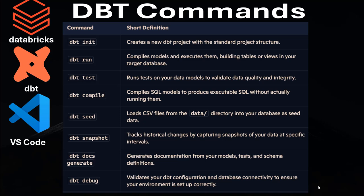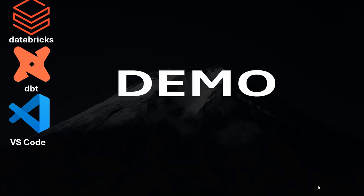The dbt snapshot tracks historical changes by capturing snapshots of your data at specific intervals. And dbt docs generate generates documentation from your models, tests, and schema definitions. DBT debug validates your DBT configuration and database connectivity to ensure your environment is set up properly.